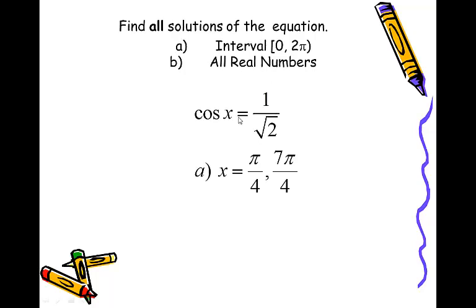Part A is: find the values between 0 and 2 pi that make this a true statement. You should have been thinking 45 degrees, because the cosine of pi over 4 is 1 over square root of 2, and cosine is positive in quadrants 1 and 4. So the two angles between 0 and 2 pi are pi over 4 and 7 pi over 4, both of which have a cosine of 1 over square root of 2.